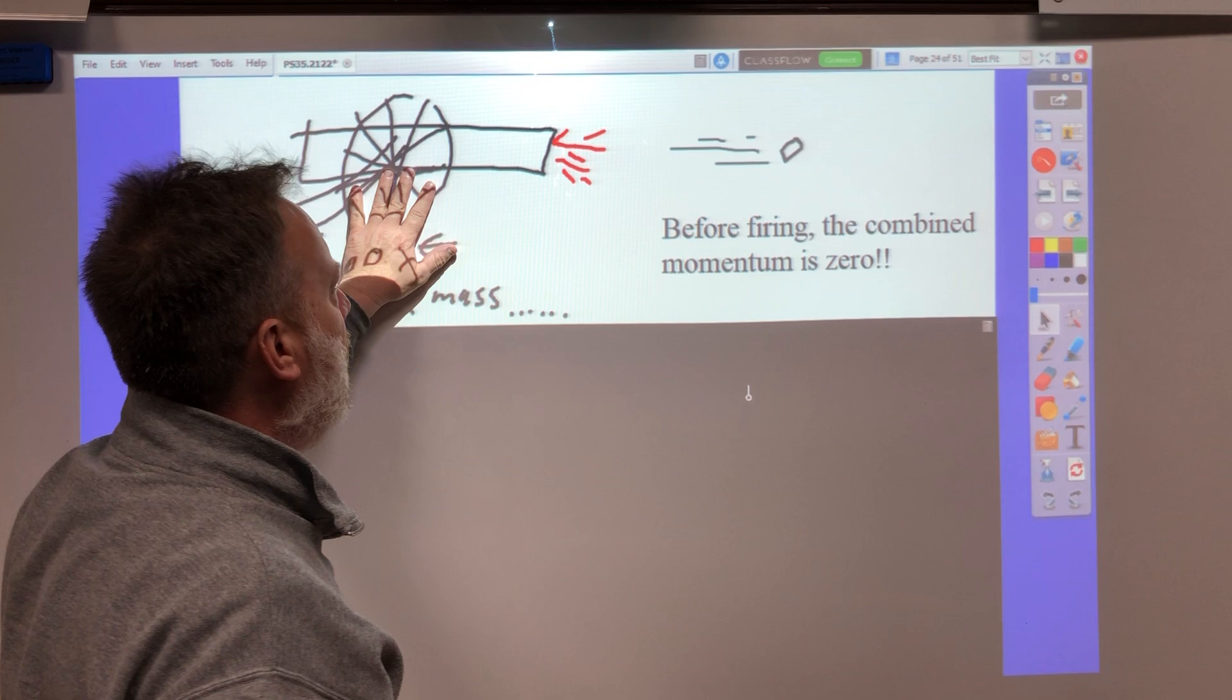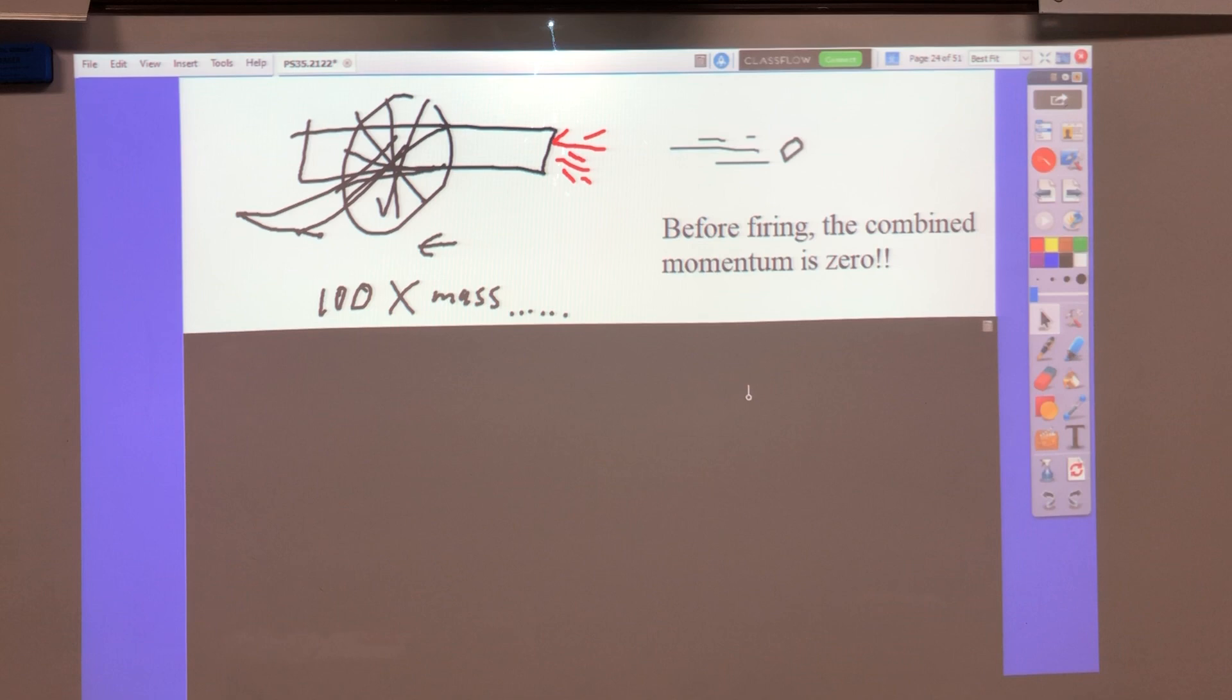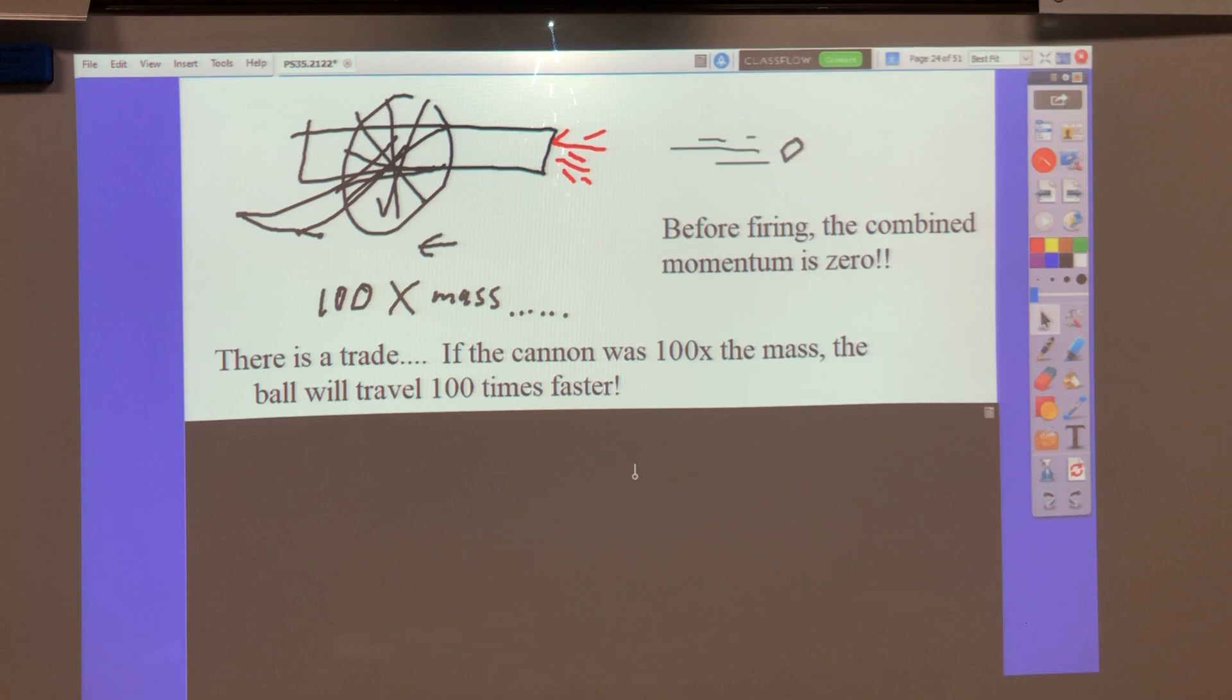But because this is low mass, it's going fast. Because this is high mass, it's going slow. But when you take mass times velocity equals mass times velocity, they're equal and opposite. So if the cannon is a hundred times the mass, this will go a hundred times faster. That's an easy way to do these problems.